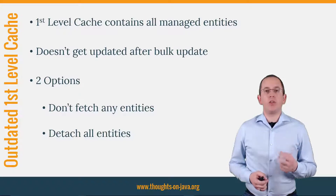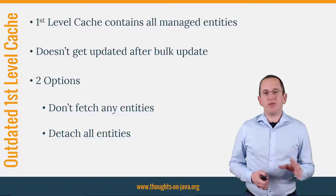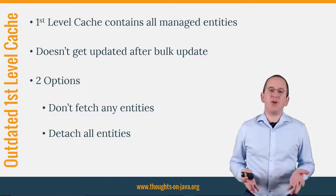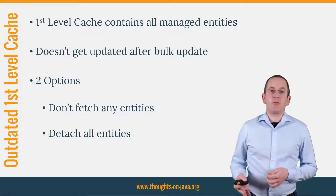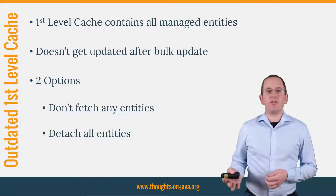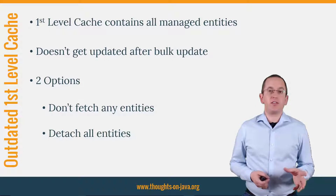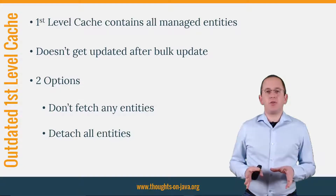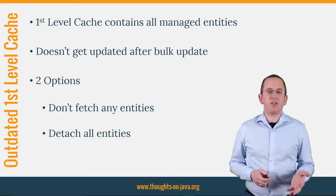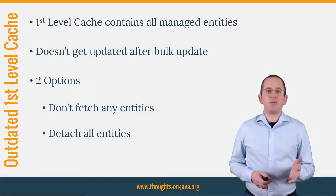There are 2 options to avoid this issue. The most obvious one is to not fetch any entity from the database which will be affected by the update statement. But we both know that this is not that easy in a complex modular application. If you can't avoid fetching some of the affected entities, you need to update the first level cache yourself. The only way to do that is to detach them from the active persistence context and let Hibernate fetch it again as soon as you need them. But be careful — Hibernate doesn't perform any dirty check before detaching the entity, so you also have to make sure that all updates are written to the database before you detach the entity.